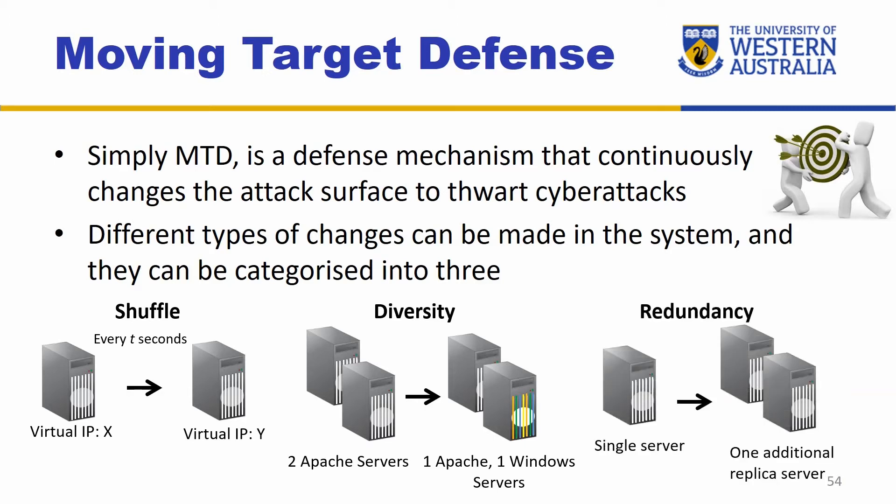The last one is redundancy. Information security has three objectives: confidentiality, integrity, and availability. Redundancy is more focused on the availability side, where we try to provide more resources to mitigate denial of service types of attacks. So if one server goes down, there's a backup server that can be used to keep providing the service to legitimate users.